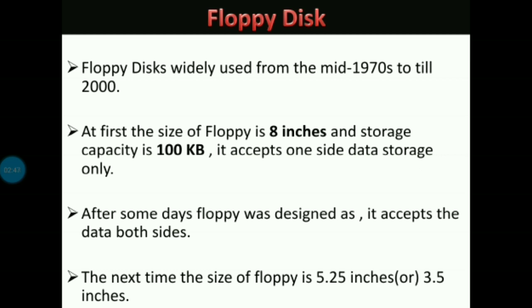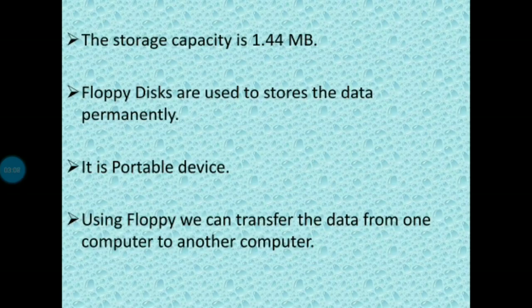After some days, floppy was redesigned to accept data on both sides. The size became 5.25 inches or 3.5 inches. See the floppy — how it looks like. The duration is 1970 to 2000. After redesign, the storage capacity increased to 1.44 MB, which is less but better than 100 KB. Floppy disks are used to store data permanently and are a portable device — using a floppy disk, we can transfer files from one computer to another.